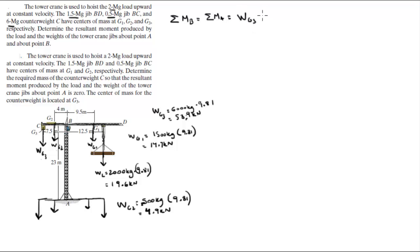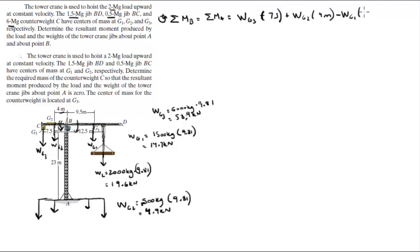Writing out the equation: wg3 times its lever arm of 7.5 meters — assuming counterclockwise is positive, this one is counterclockwise so it's positive — plus wg2, which also acts counterclockwise, times 4 meters. Then wg1 turns it clockwise, so it's minus wg1 times 9.5 meters, minus the load which also acts clockwise —